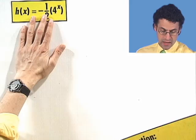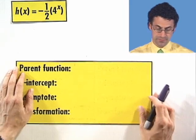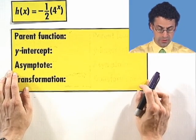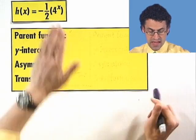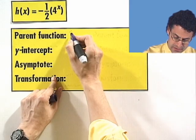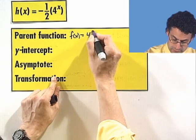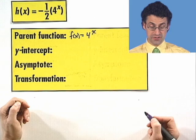Let's take a look at another example. h of x equals negative 1 half times 4 to the x. All right. So first of all, what's the parent function? Well, the parent function is just going to be that exponential function there, 4 to the x.